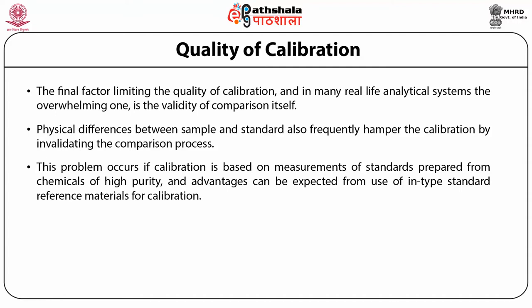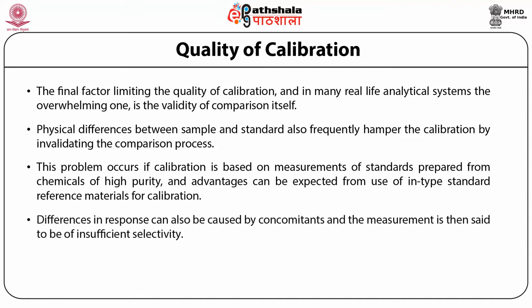In calibrating an instrument, one must be reasonably sure that the instrument will respond to the measurement in the standard in the same way it does to the measurement in a different environment — the unknown. The physical differences between sample and standard also frequently hamper the calibration while invalidating the comparison process. Among the physical properties that need to be identical in standards and unknowns are temperature, pressure, viscosity, turbidity, particle size, surface roughness, and thickness. Differences in response can also be caused by concomitant species — the measurement is then said to be of insufficient selectivity.